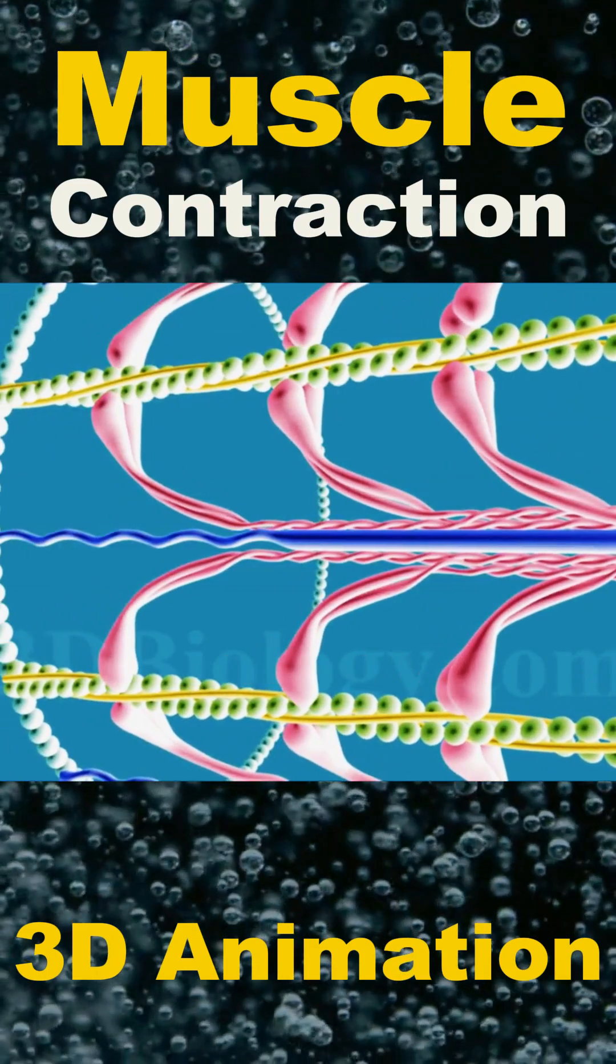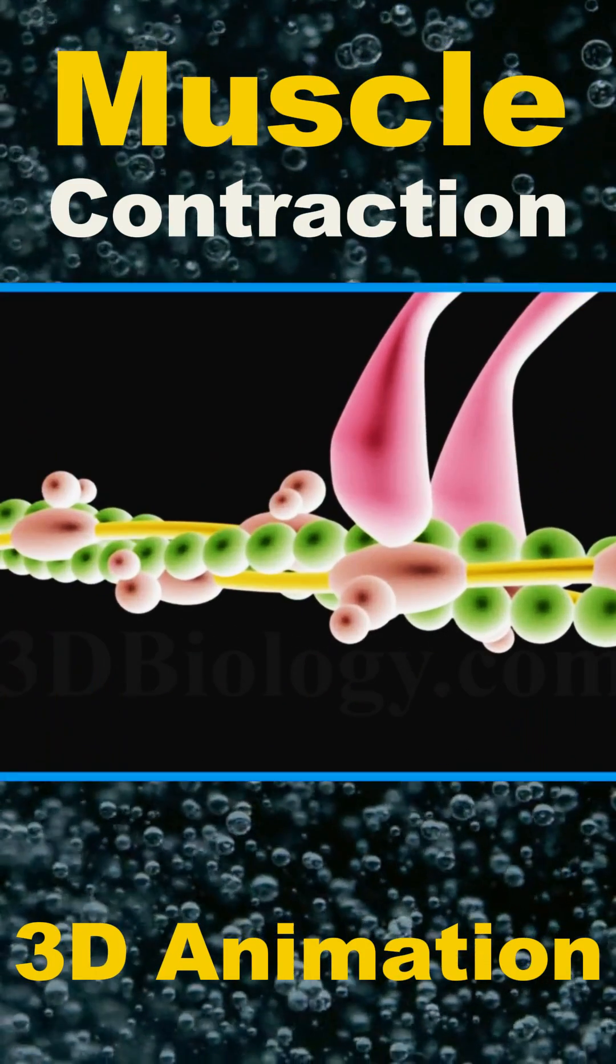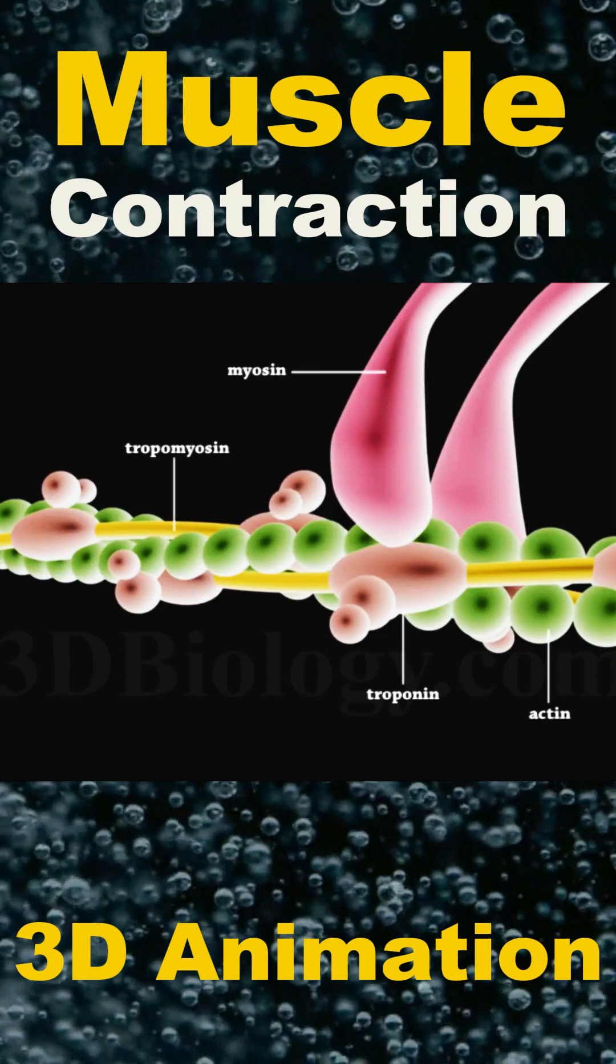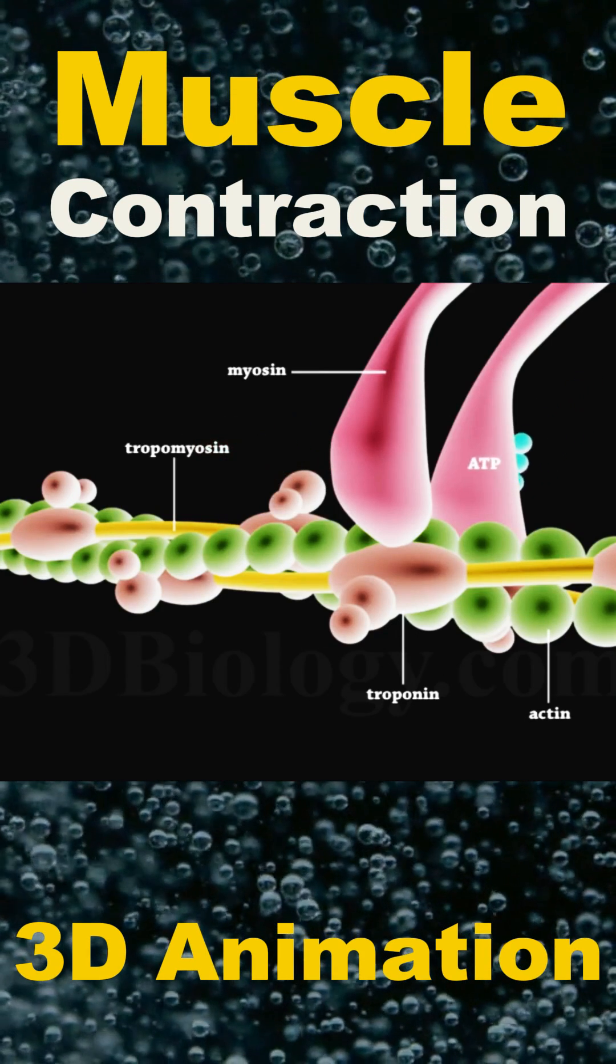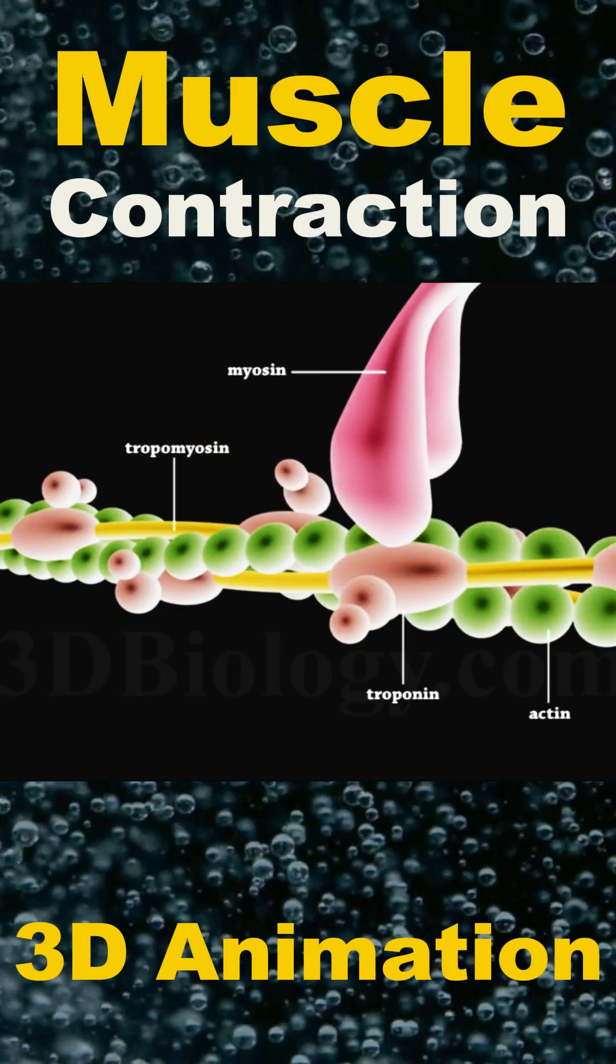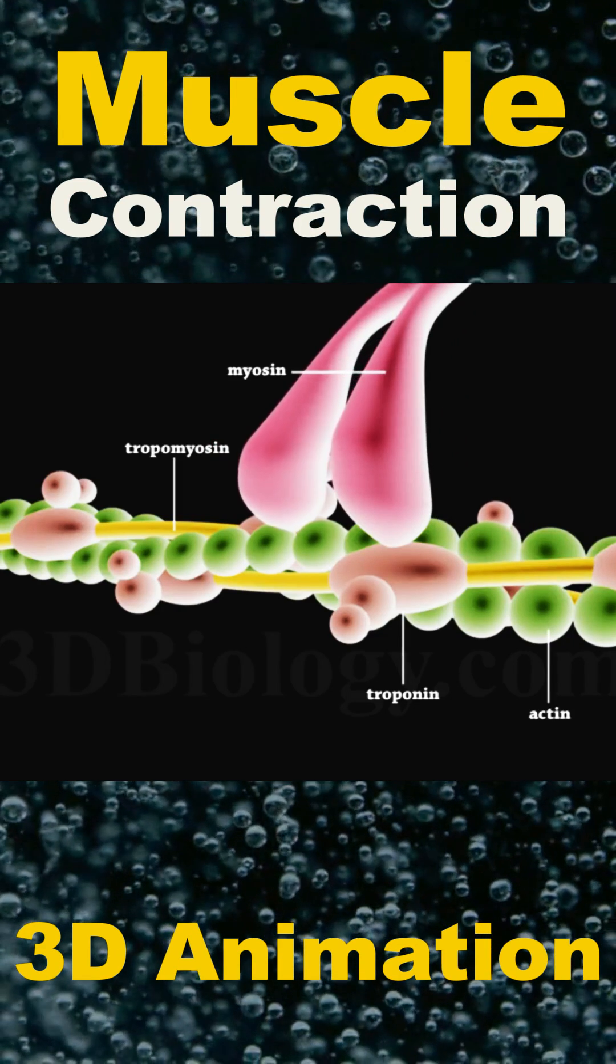These myosin heads traverse along actin filaments utilizing ATP for energy. Tropomyosin, a component of a complex, inhibits myosin from sliding along thin filaments.